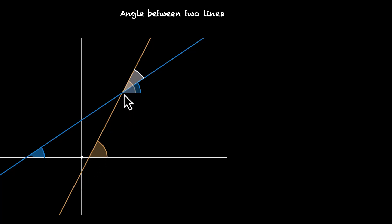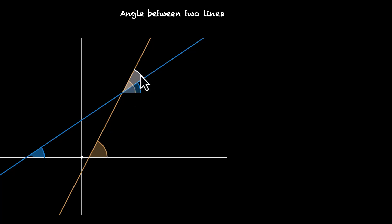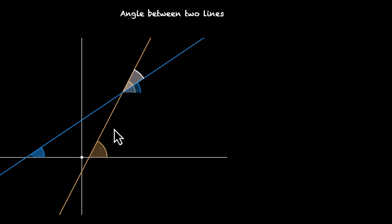Now let's talk about the point of intersection. This white angle is the angle between these two lines. Is this angle related to the blue and yellow angles? Yes. If you look at it closely, this angle is the difference between these two angles — yellow angle minus blue angle gives you the white angle. We'll use this and some identities from trigonometry to derive the formula for the angle between two lines.